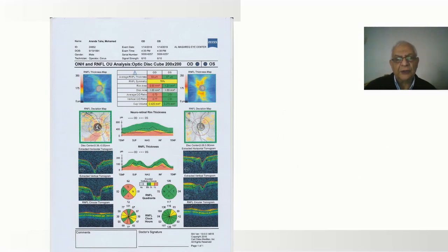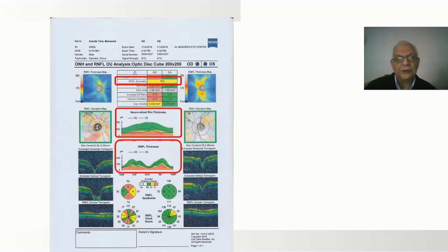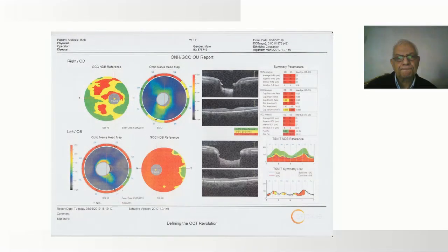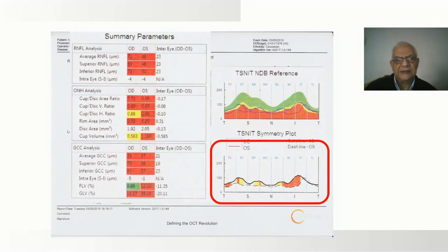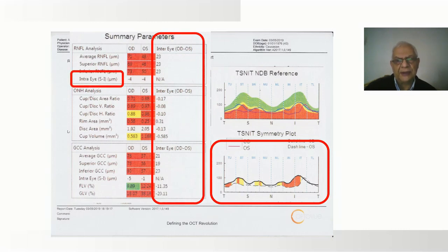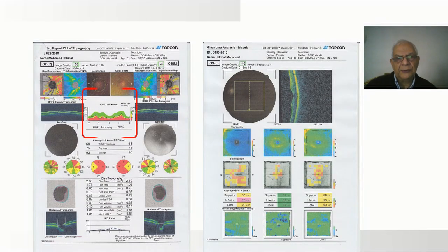Different OCT machines also show inter-eye differences. For example, differences between the retinal fiber layer right and left, differences in the neural rim right and left. In the OPTI view, differences between the two eyes are displayed. Recent models show differences between the two eyes or between superior and inferior. In the Topcon, differences between the two eyes and differences in the various parameters of the macular area are shown.